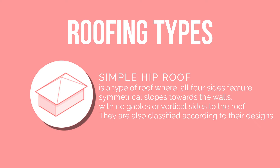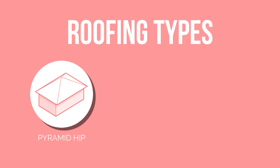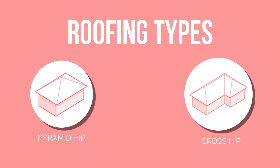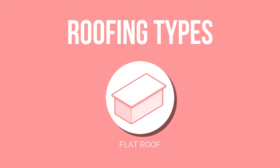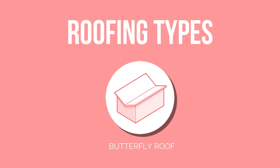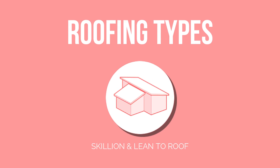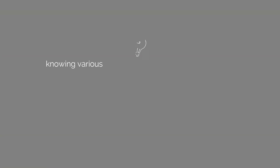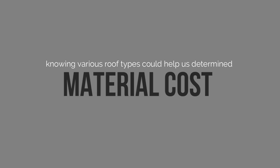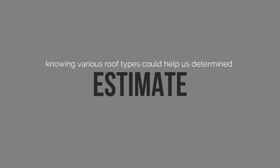Hip roofs are also classified according to their designs: pyramid hip roof, cross hip roof, gambrel roof, flat roof, butterfly roof, and skillian and link to roof. Knowing various roof types could help us determine material cost and most especially the estimate in making such design.